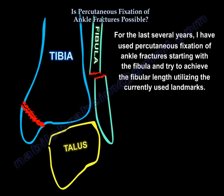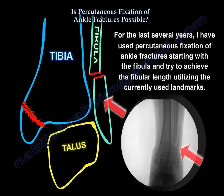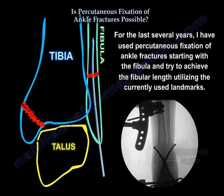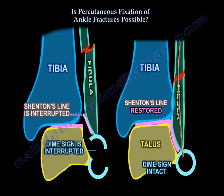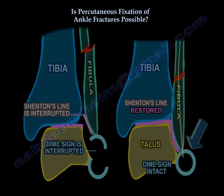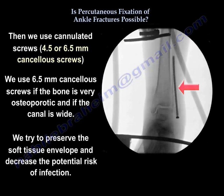For the last several years I have used percutaneous fixation of ankle fractures, starting with the fibula and trying to achieve fibular length using currently established landmarks. You can see the landmarks on the diagram — look for Shenton's line and the dime sign. We use cannulated screws, 4.5 or 6.5mm; we use 6.5 if the bone is very osteoporotic and the canal is wide. We try to preserve the soft tissue envelope and decrease the potential risk of infection.